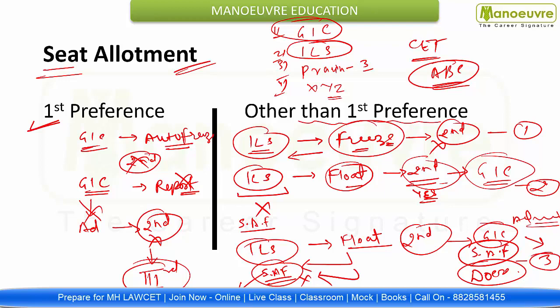Fourth chance: you got ILS — other than first preference — and you did not report to the allotted college. Then also you can participate in the second round for the betterment of seat. So these are all the chances. Simple: if you freeze, you cannot move further. If you want to float, you can move ahead.